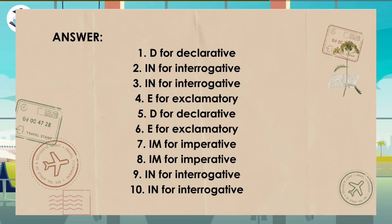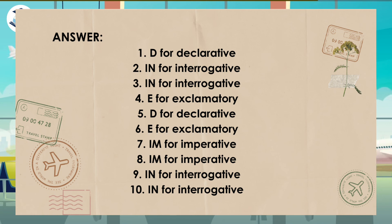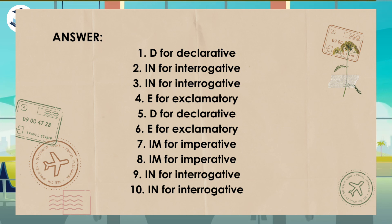Here are the answers for this activity. Number one: D for declarative. Number two: IN for interrogative. Number three: IN for interrogative. Number four: E for exclamatory. Number five: D for declarative. Number six: E for exclamatory. Number seven: IM for imperative. Number eight: IM for imperative. Number nine: IN for interrogative. And number ten: IN for interrogative.